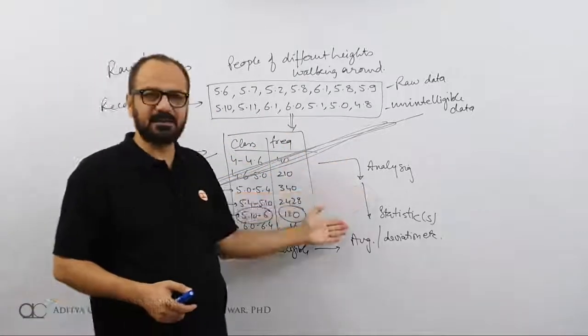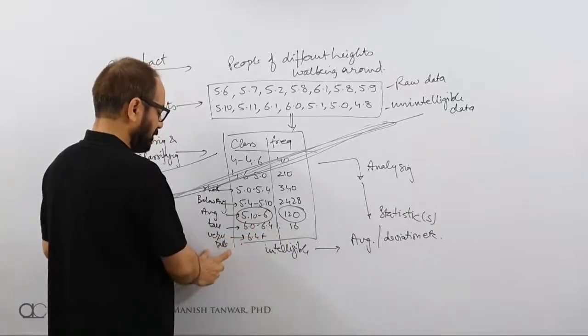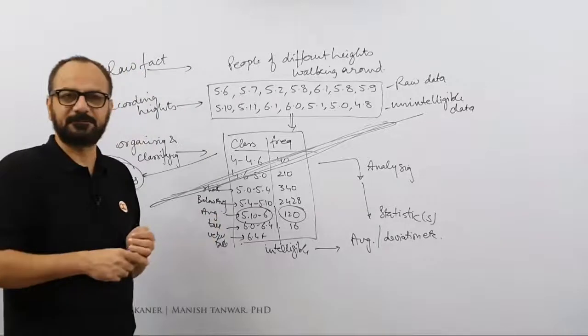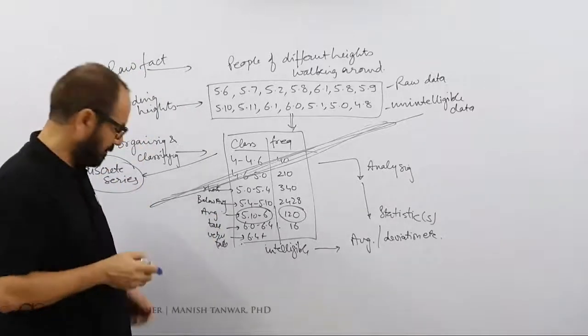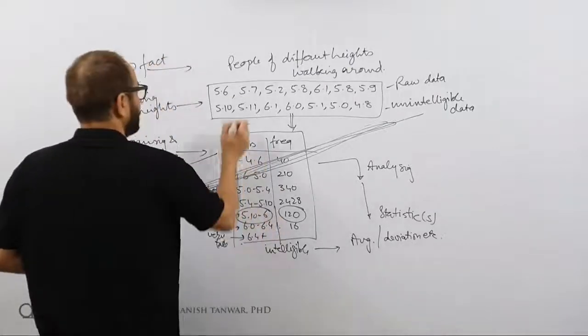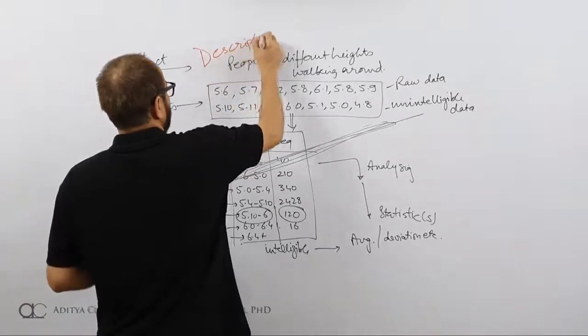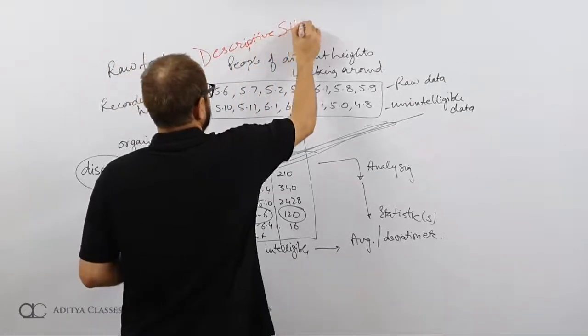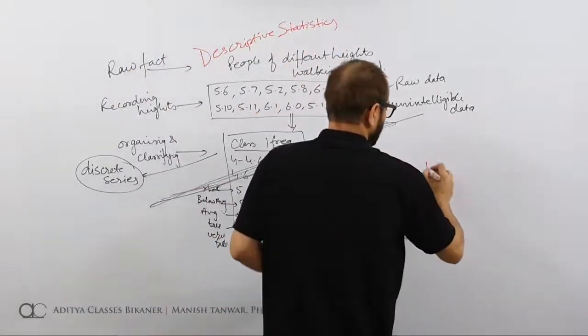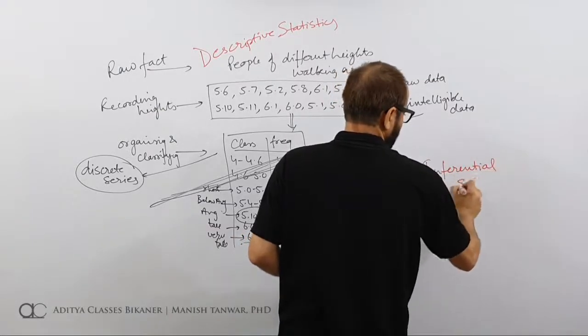Another section is telling me average height, telling me how many people are very tall, telling me how many people are tall, telling me how many people have average height. So all this is operation. So here we can divide statistics into two. One is this section, this is known as descriptive statistics, and this section is known as inferential statistics.